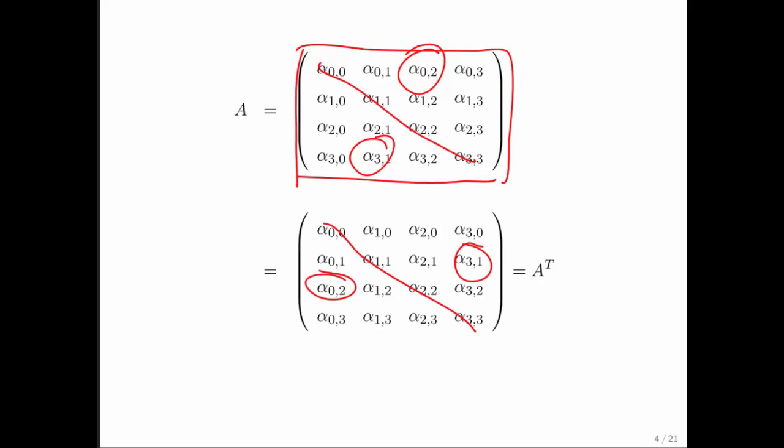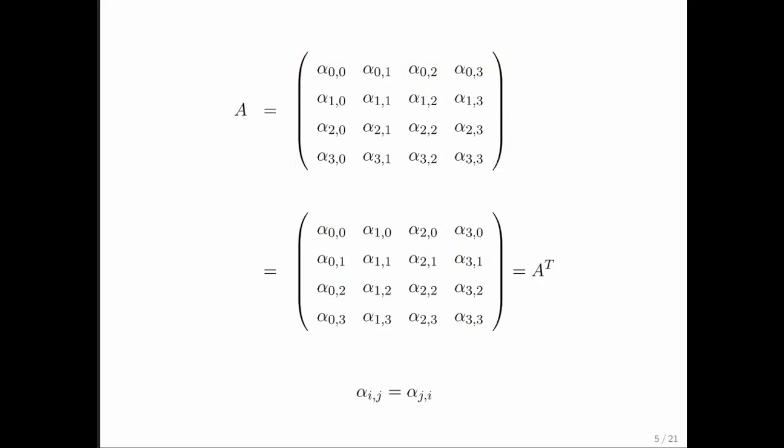And what you notice is that if A is equal to A transpose, then this entry right here, let's arbitrarily say that that's alpha ij, is equal to alpha ji. So what we notice is that a matrix is a symmetric matrix if and only if its ij entry is equal to its ji entry.